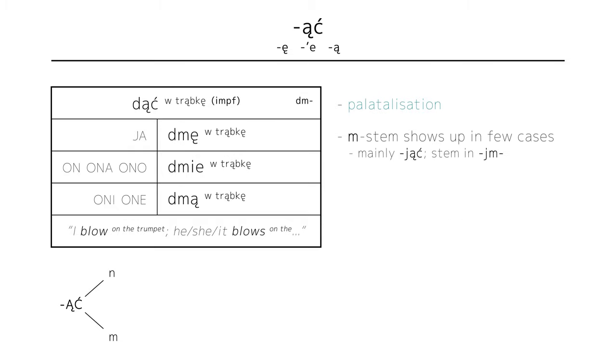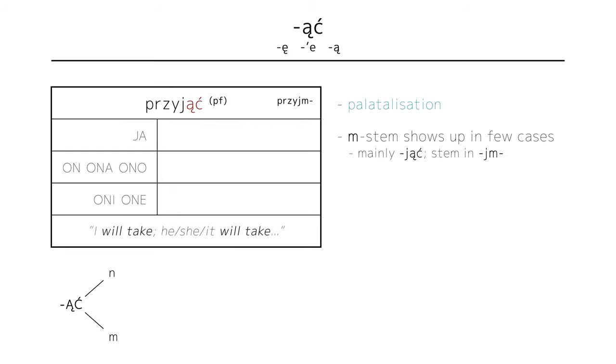Similarly, verbs with the stem jąć have stems in jm. Take przyjąć, to take or accept, which becomes przyjmę, I will take, przyjmie, he, she, it will take, and przyjmą, they will take.